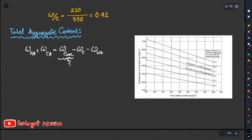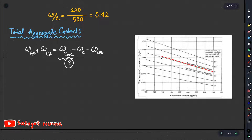We also consider the type of aggregate — crushed or uncrushed. There are two types of crust class. The specific gravity, or relative density, is 2.78.